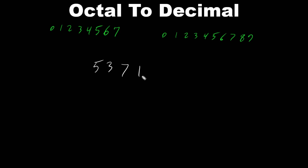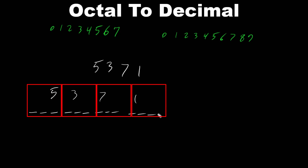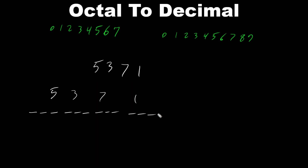Let's say we have the octal number 5371 and we want to convert this to a decimal number. What do we need to do first? We have to separate them — 5, 3, 7, 1 — and write 3 bits per octal digit. Why 3 bits? Because every octal number has 3 bits. Depending on the value, some of the bits turn on and some turn off.